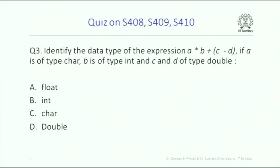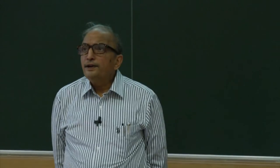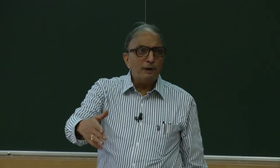Identify the data type of the expression A*B + (C - D) if A is of type char, B is of type int, and C and D are of type double. There is one operation, a second operation, and a third operation — so there should be at least three steps. In the first step some sub-operation takes place giving a value type, the second step gives another value type, and the third step gives the final value.